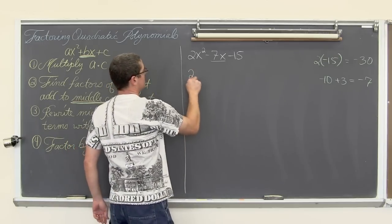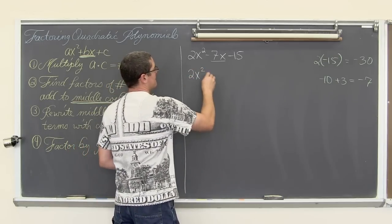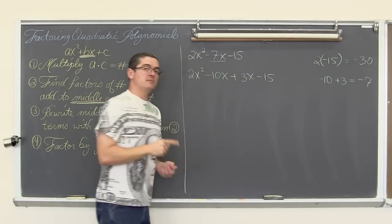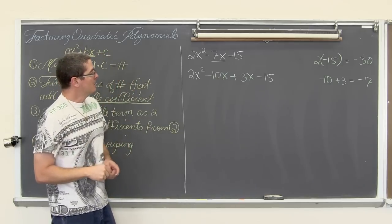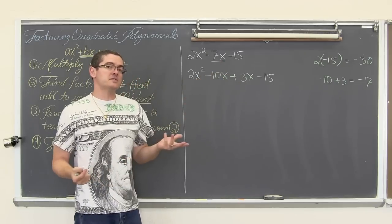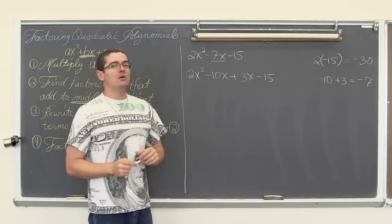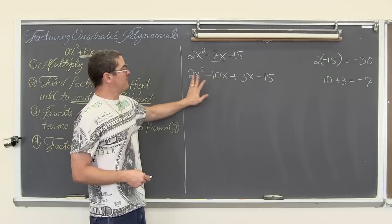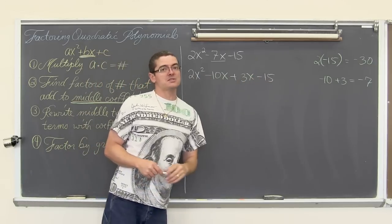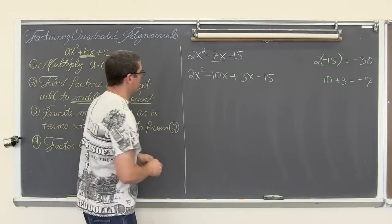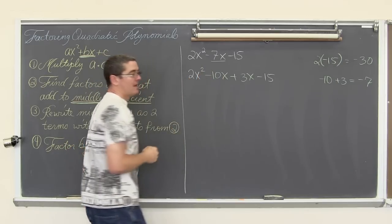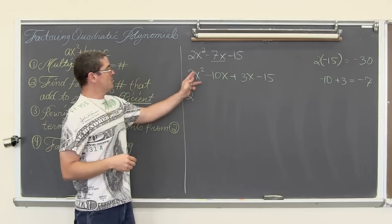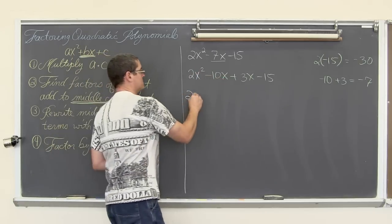We have 2x squared minus 10x plus 3x minus 15. Notice those scratch numbers: negative 10 and positive 3 do equal negative 7, so we have not changed the value of our expression, just made it look different. Now we are going to factor by grouping — take something out of the first two terms and something out of the last two terms, looking for the greatest common factor.